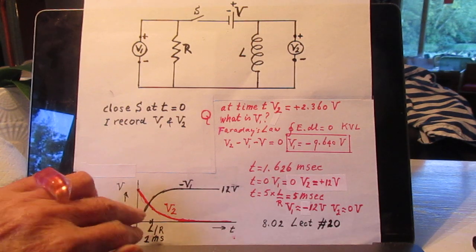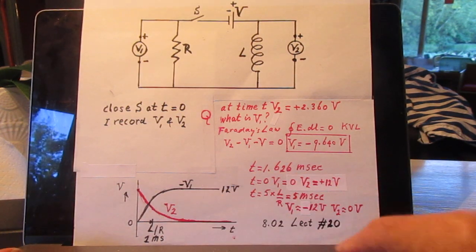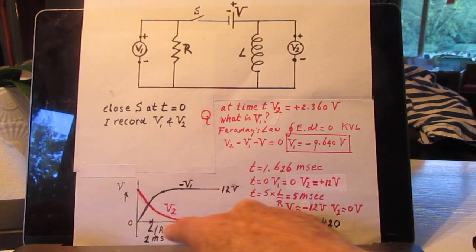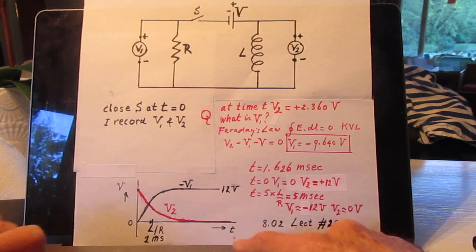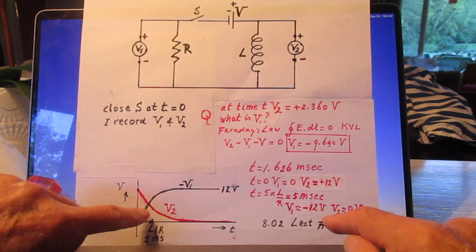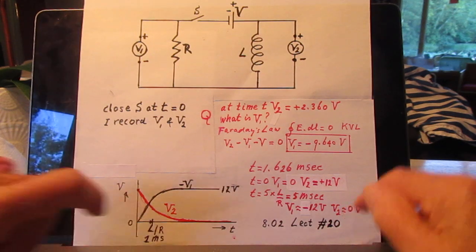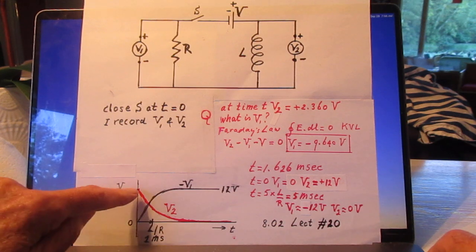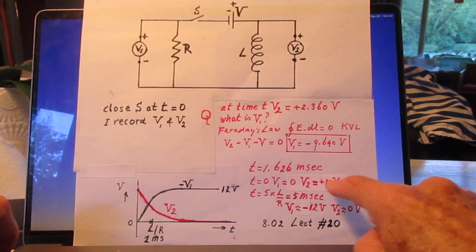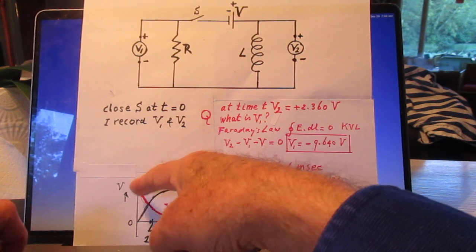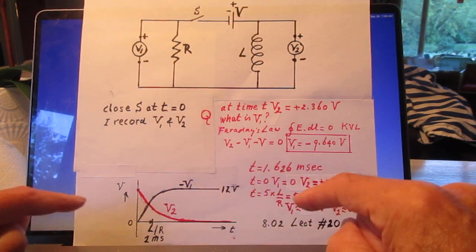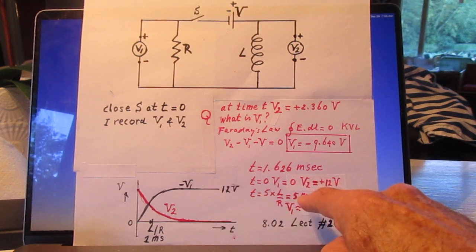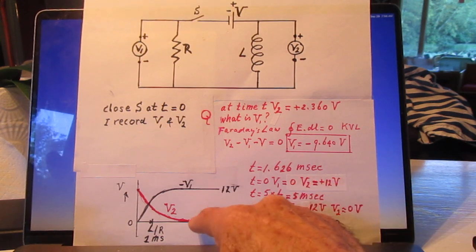I put here a sketch, not to scale, of the voltage that you measure versus time. This point here would be roughly L over R, which is 1 millisecond. V2 starts at plus 12 volts at T equals 0 and goes down with time constant L over R. And when it reaches 5 times L over R, clearly, V2 is 0.